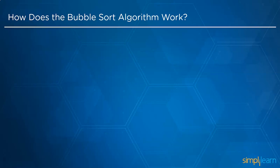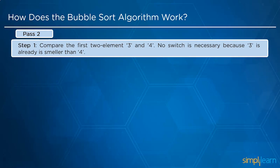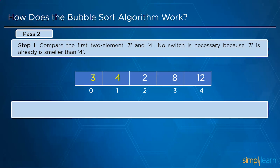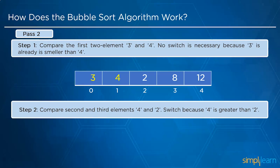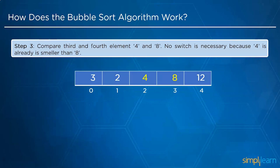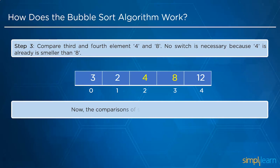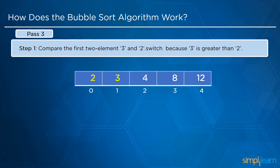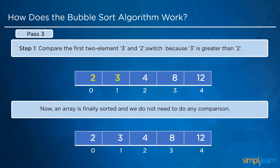In pass 2, there are 3 steps. Step 1: compare 3 and 4 — no swap needed, they are already in order. Step 2: compare 2 and 4 — no swap, 2 is less than 4. Step 3: compare 4 and 8 — no swap, 4 is already less than 8. Note that 8 and 12 are not compared since the last element is already sorted. In the last pass, there is only one step: compare 2 and 3, then swap because 3 is greater than 2. The array is now fully sorted.